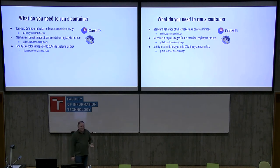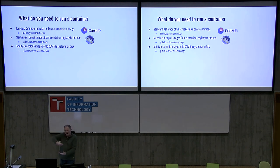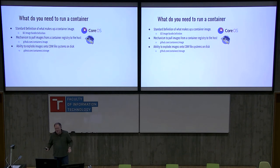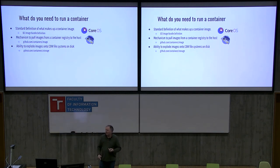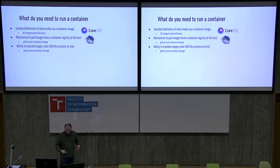Now we have a mechanism to define an image and pull an image. The next thing we need is a mechanism for storing the image on disk. Container images tend to be layered — you have a base image, then JBoss on top, then Apache. In order to do that, we needed a special kind of copy-on-write filesystem. We created a separate library called GitHub Container Storage, covering things like overlay filesystem, device mapper, and ButterFS. We pulled that code out of Docker into a separate library so it could be developed at a different rate.